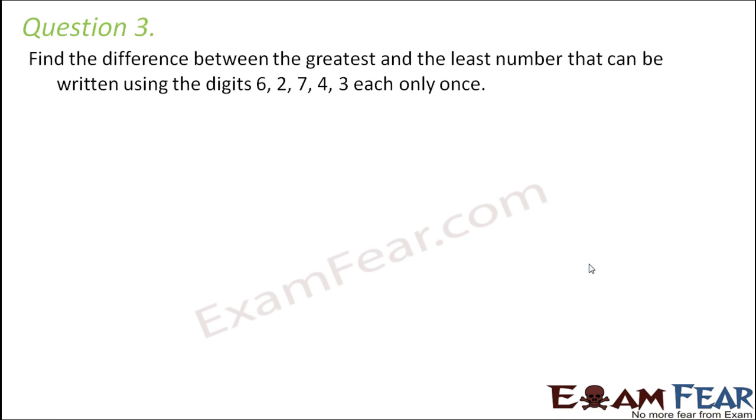Question number 3. Find the difference between the greatest and the least number that can be written using the digits 6, 2, 7, 4, 3. Now we have learned that if we are given a set of digits, what is the greatest number that you can make out of those digits? The greatest number would be the one where these digits are arranged in decreasing order. That is, you write the largest digit in the beginning and the smallest digit at the end.